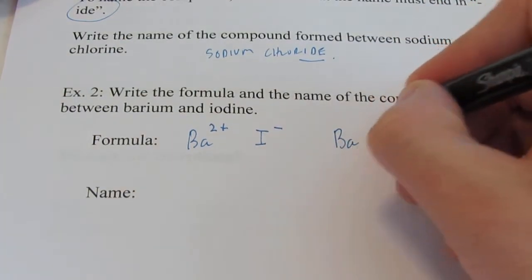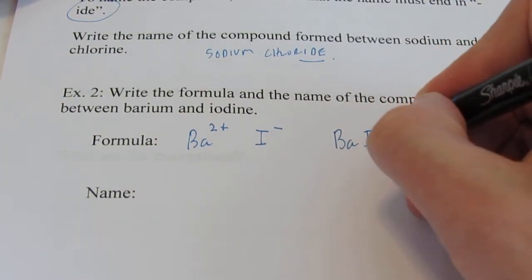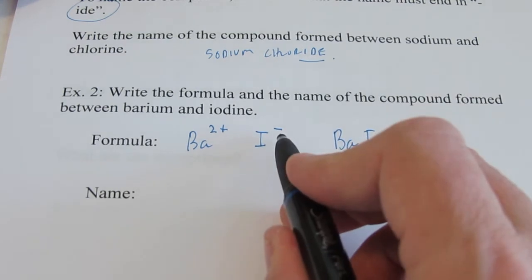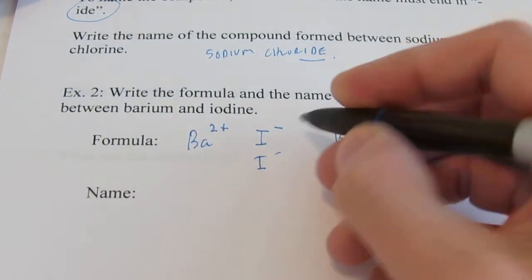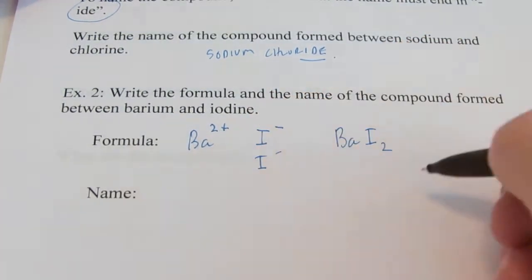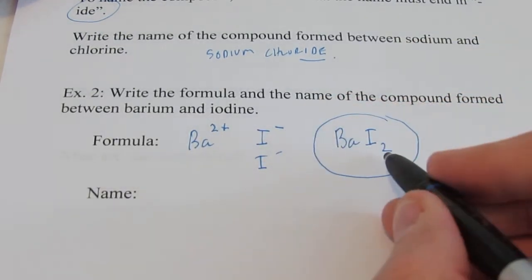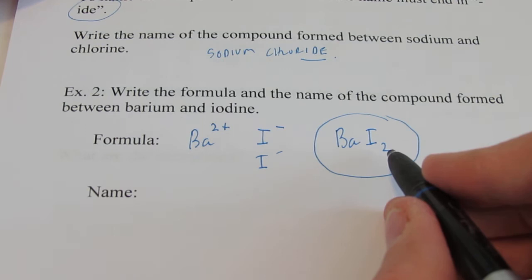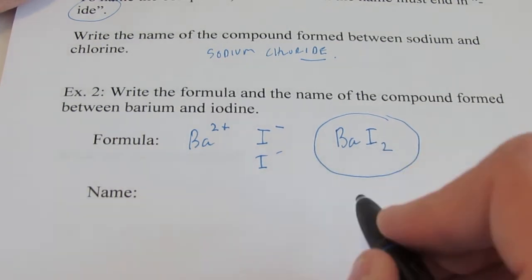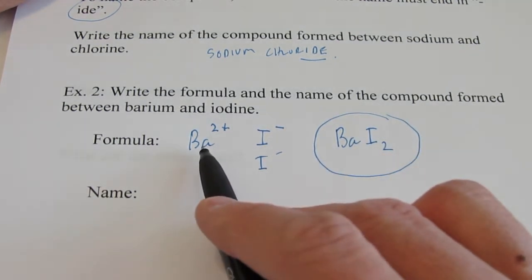So how about Ba I2? I need two of those negatives to balance out that two positive. And since I need two of those negative ions, I put the subscript two next to the ion that I need more than one of.